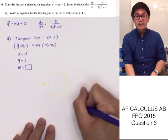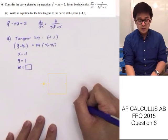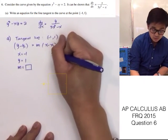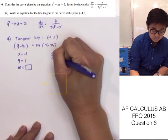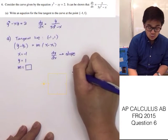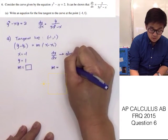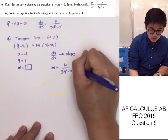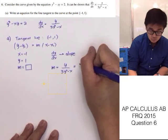We just need to find the slope to complete our equation of the tangent line. We are given dy/dx, and we know that the slope of the function is given by the derivative. So dy/dx represents the slope. To find the slope, we use the given derivative function and plug in the value of the point.